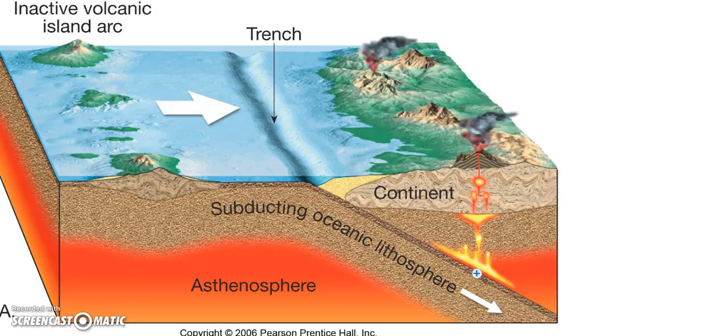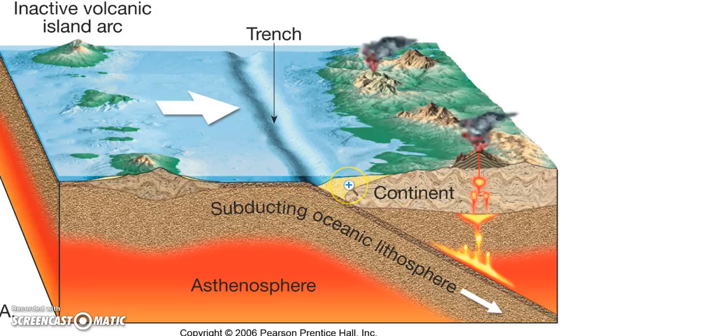When the plate subducts, it's going to create compressional stress. It's also going to create the oceanic trench, and here you're going to have your accretionary wedge as well.